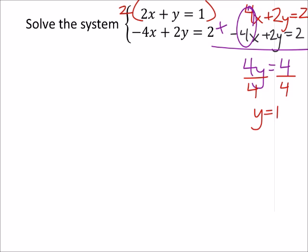If I know that y is 1, I just need to replace it into one of these two equations and solve. The top one looks like it's going to be the easiest one to use, so I've got 2x plus y equals 1, but I'm going to replace the y with 1.